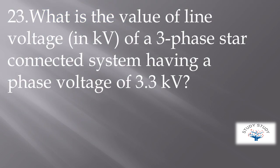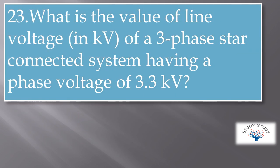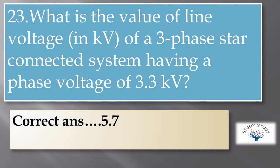The value of line voltage in a 3-phase star connected system having a phase voltage of 3.3 kV — the correct answer is 5.7 kV. The line voltage is equal to root 3 multiplied by phase voltage, so root 3 into 3.3 equals 5.7 kV.